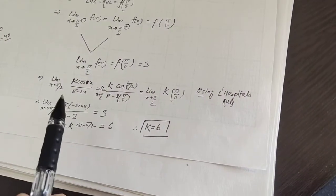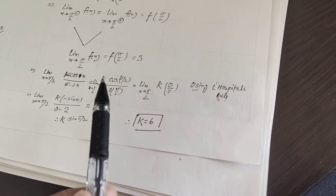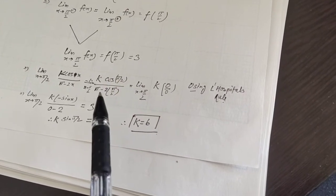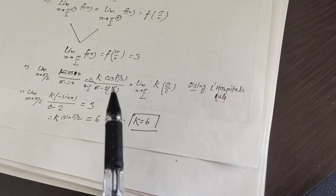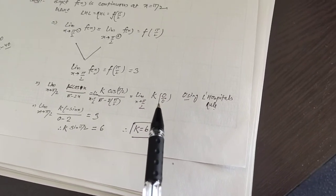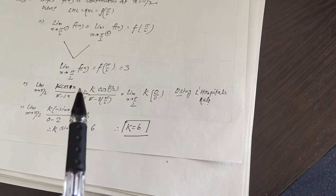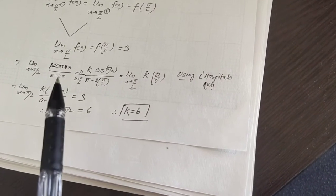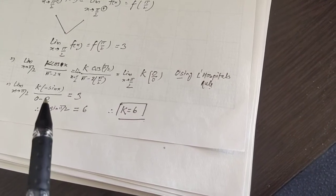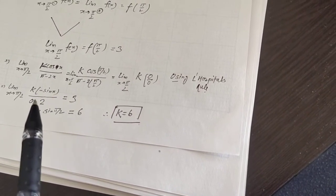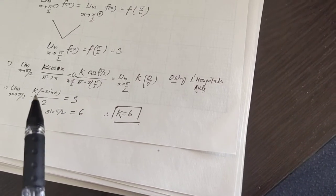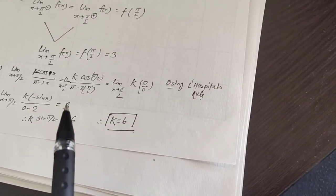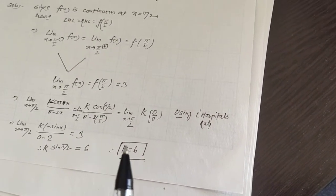If we directly substitute x equals π/2, we get k·cos(π/2) divided by (π minus 2·(π/2)), which is k·0 divided by 0 — a 0/0 indeterminate form. So we apply L'Hôpital's rule: differentiate numerator and denominator with respect to x. The derivative of cos x is minus sin x, and the derivative of (π minus 2x) is minus 2. This gives (−k sin x)/(−2); the negatives cancel. Substituting x equals π/2, sin(π/2) equals 1, so k/2 equals 3, giving k equals 6.